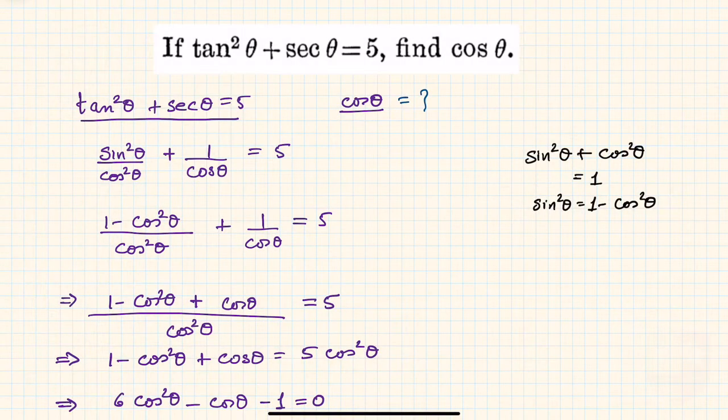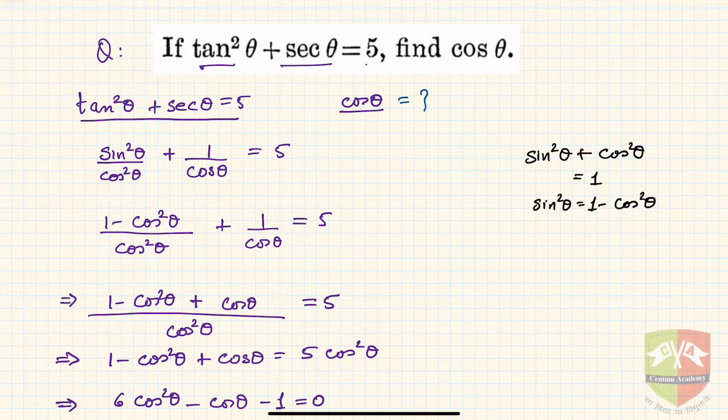Hello friends, welcome to another problem solving session on trigonometry. We have this question: if tan²θ + secθ = 5, find the value of cosθ.